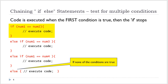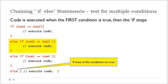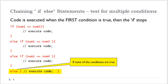We start with the first condition inside the if. If this condition is not true, then we'll look at the next condition. If that condition is not true, then we'll look at the next condition, and on and on. Finally, if none of the conditions are true, then the code inside the else will execute.